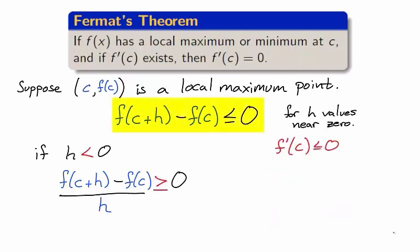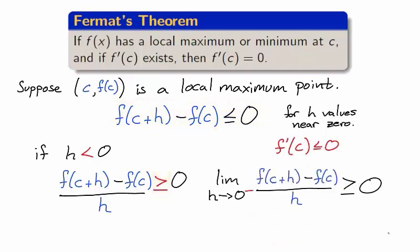Going back to the original inequality, if h is less than zero, then dividing by h reverses the inequality. And the limit as h approaches zero from the left is at least zero, which tells us that the derivative of f at c is at least zero. We now have two inequalities. The derivative of f at c is at most zero, and the derivative of f at c is at least zero. Therefore, we have that the derivative of f at c is exactly zero.